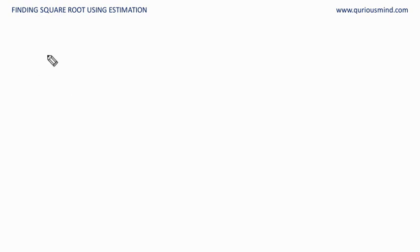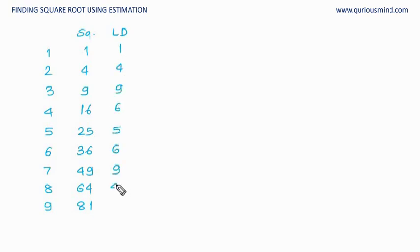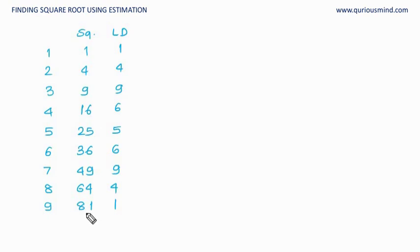Let us first write the squares of numbers 1 to 9 and we will also write the last digit. So this is the square and this is the last digit. The pattern is: numbers which are a pair of 10 — 1 and 9 have the same last digit, 2 and 8 have the same last digit, 3 and 7 have the same last digit. We also know that 9 is the largest single digit number and its square is 81, which is a two-digit number. So the maximum square of a single digit number is a two-digit number. We are going to use this information.